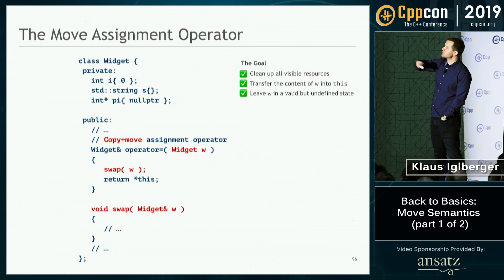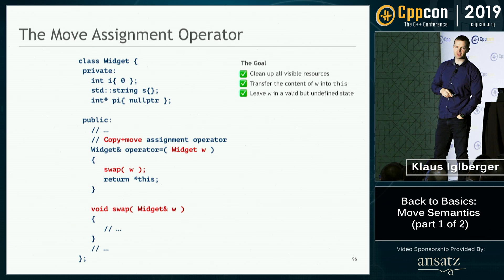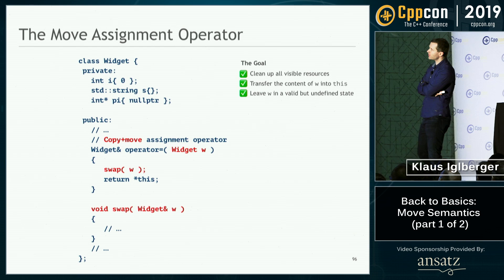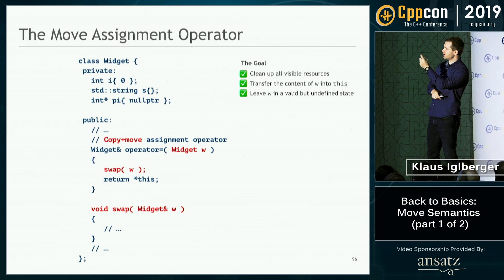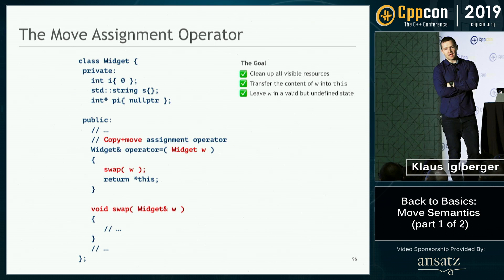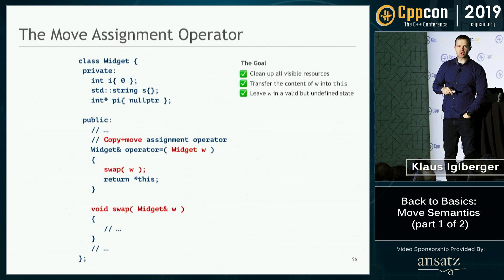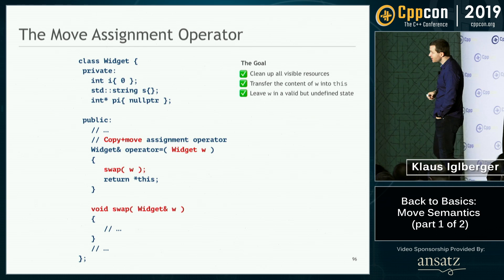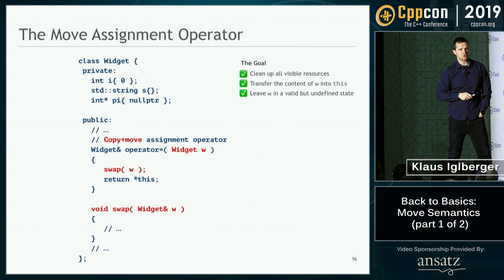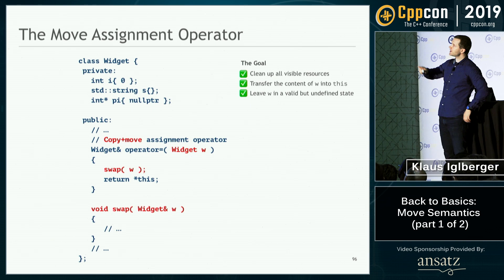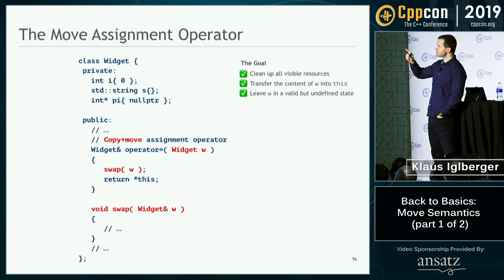There's one trick to show: one possible implementation passes the widget by value. If you pass an L value, the argument is copied using the copy constructor and then you swap internally. If you pass an R value (some temporary), the move constructor is used to construct the argument, and you get the move for free — you only need to write the move constructor. It is not as efficient as writing both functions explicitly, but it's a nice trick if you want to quickly cover the operations.